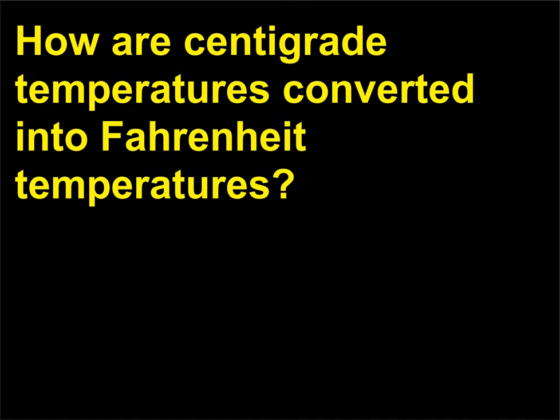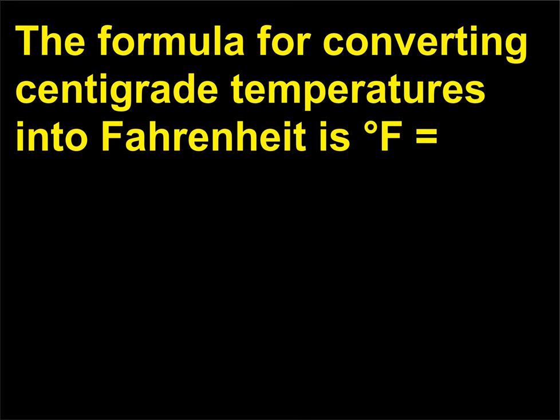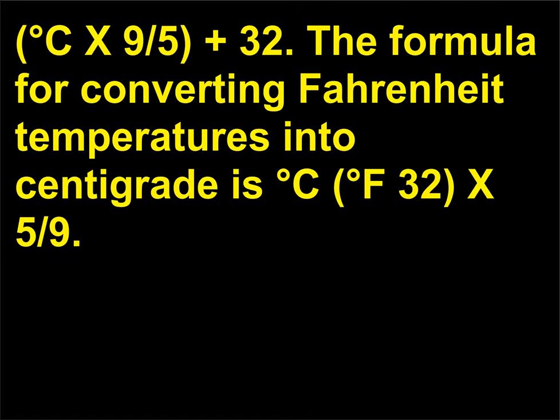How are centigrade temperatures converted into Fahrenheit temperatures? The formula for converting centigrade temperatures into Fahrenheit is: degrees F = degrees C × 9/5 + 32. The formula for converting Fahrenheit temperatures into centigrade is: degrees C = (degrees F − 32) × 5/9.